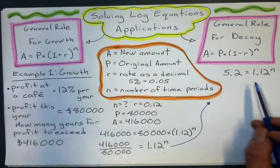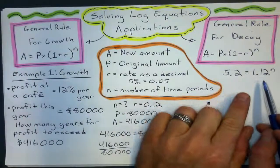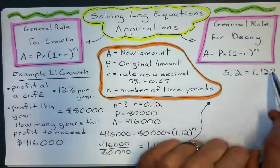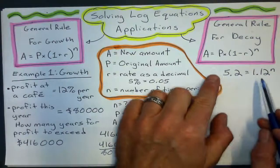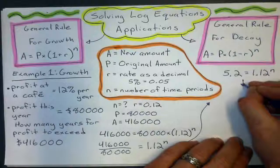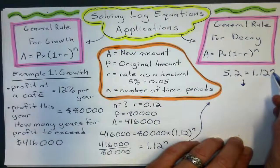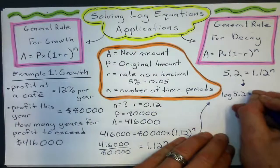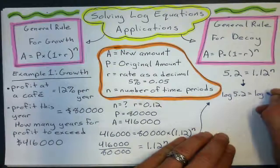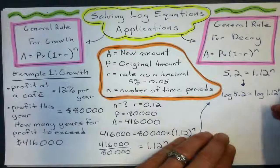And when I do that, I get 5.2 equals 1.12^N. And this is our goal when solving these equations is that I want to have a simple exponential equation where I'm solving for that exponent. Because now, I take the log of both sides. Now, is when I use logarithms because I'm solving for N. So, I'd say log 5.2 equals log 1.12^N.